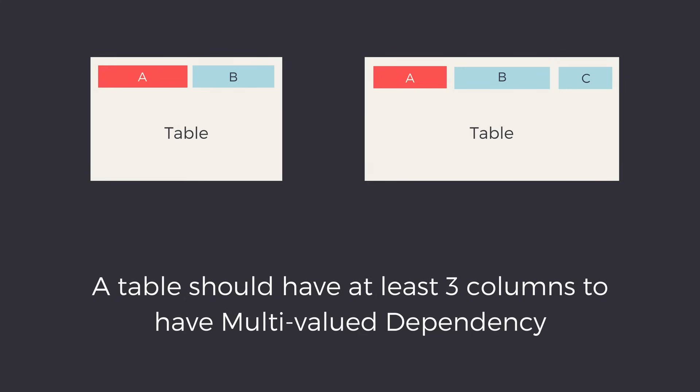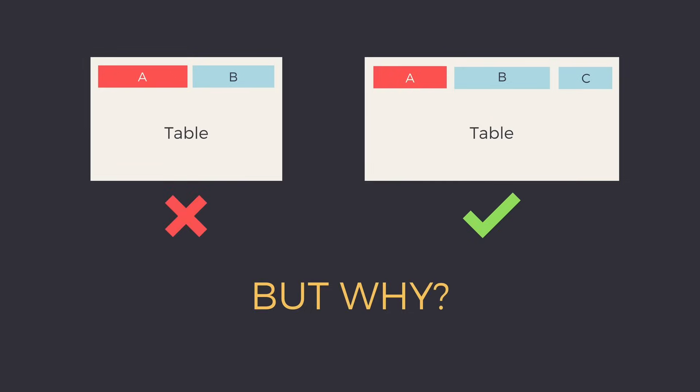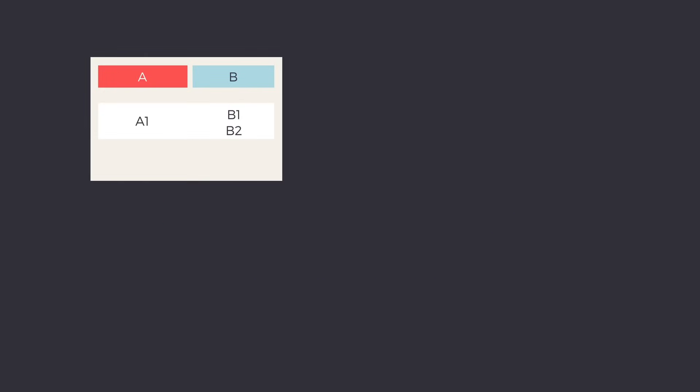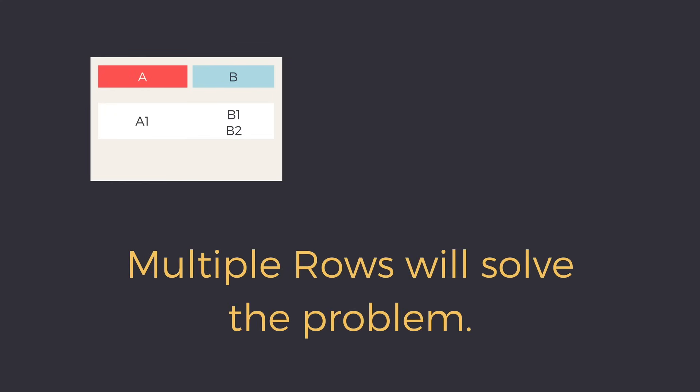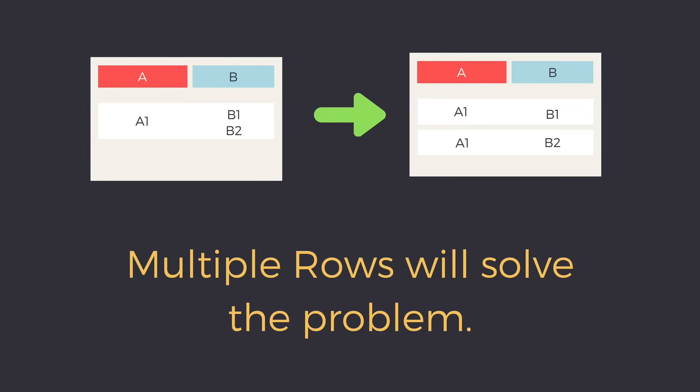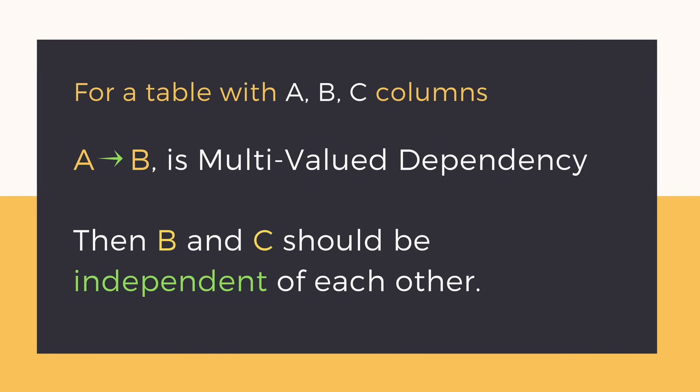For a table to have multi-valued dependency it should have at least three columns, because if we have only two columns in a table we can simply distribute the multi-valued data into multiple rows and there is no need for decomposing the table. The two other columns must also not depend on each other.